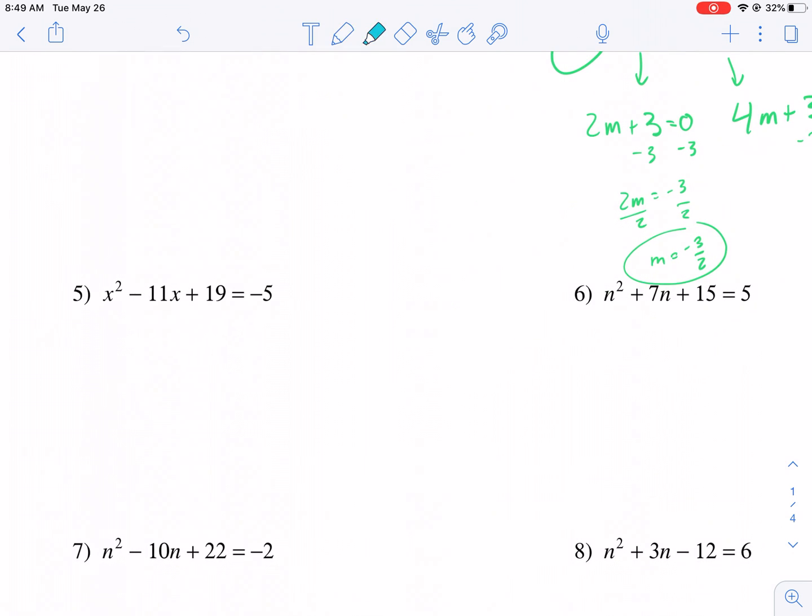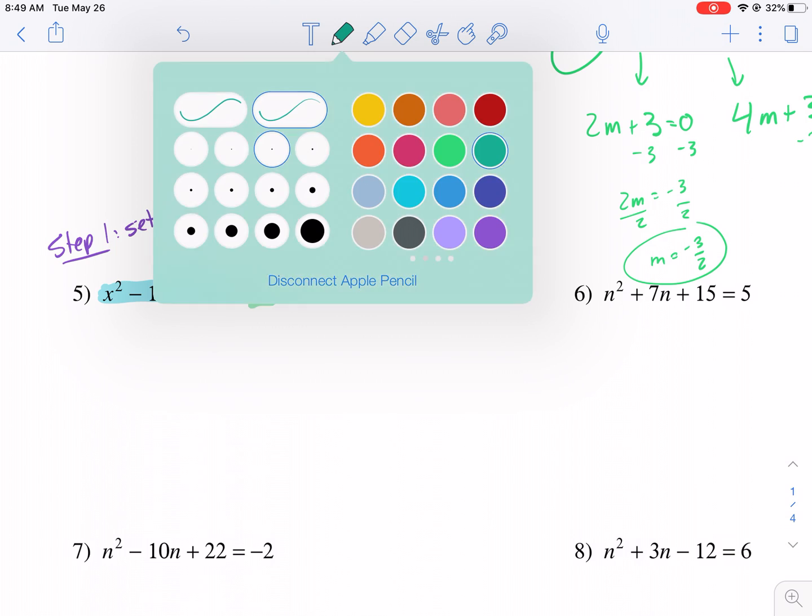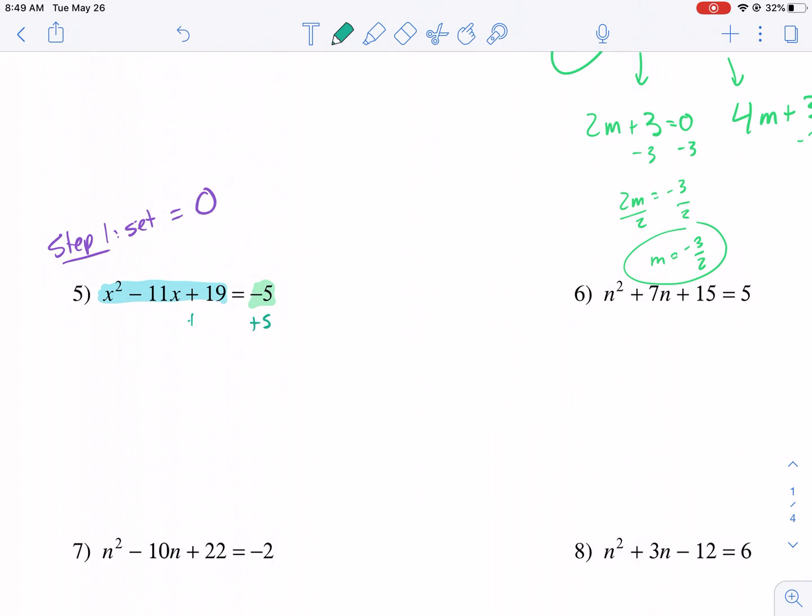Now let's look at the next ones. You'll see that number 5, we have all kinds of problems. Number 1, we don't see that this is factored already. Number 2, we notice that this is not equal to 0. So your first step, step 1, should be set equal to 0. So the first thing we want to do is add this 5 to both sides to get it out of there. We want to have it equal to 0. That's our goal.